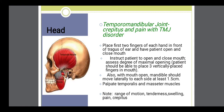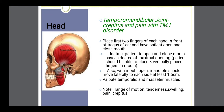Each joint has to be examined. For example, the temporomandibular joint — ask the patient to open and close the mouth, and you can assess whether that joint is functional. You can place a hand over the chin and try to close the mouth, and if the patient shows resistance, that means the muscles are working — the masseter muscle and temporalis muscle are examined like this.